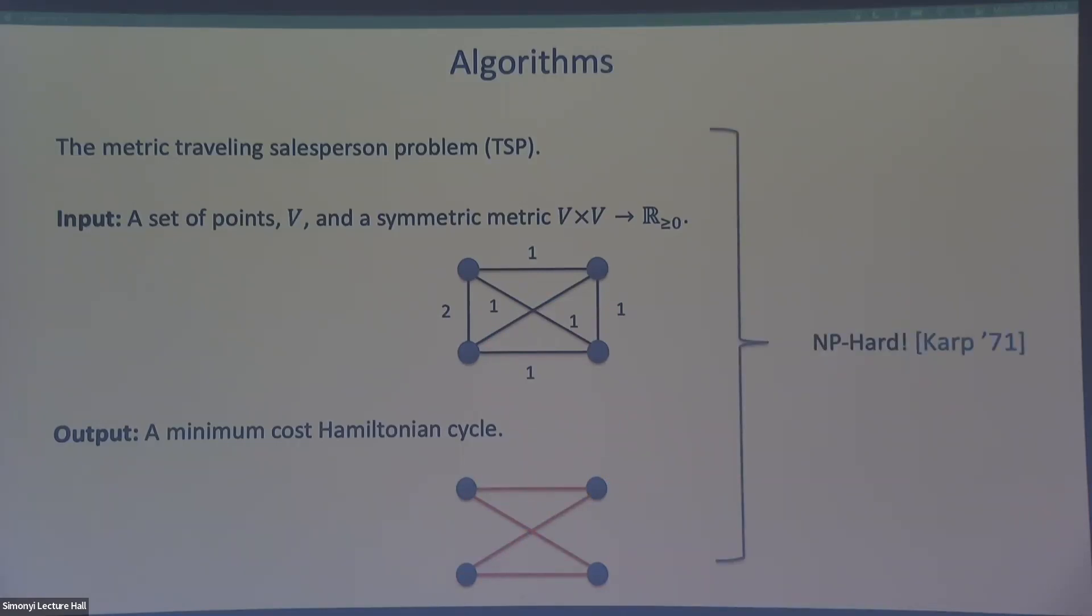But unfortunately, the problem is NP-hard. So unless P is equal to NP, there's no polynomial time algorithm that actually outputs the minimum cost cycle. And, you know, in general, what this means is basically we don't know a better algorithm than brute force. So the fastest algorithm for TSP has time about two to the n, where n is the number of points.